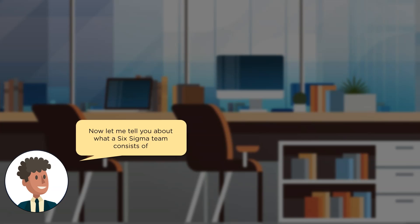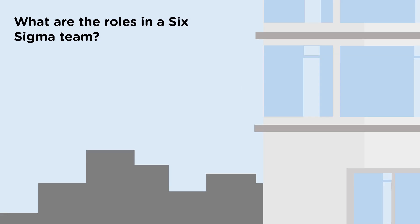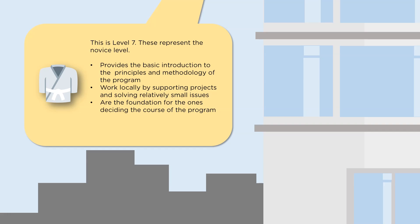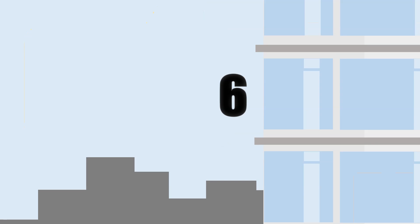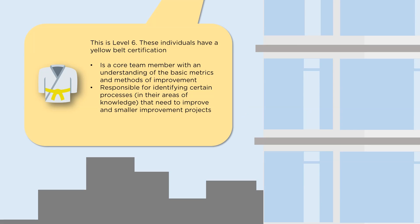Now let's talk about the roles in a Six Sigma team. First, Level 7 — these are individuals at the novice level who don't know the project in great detail but have a basic understanding of the principles and methodology. They support smaller projects and form the foundation for people who decide where the program is going. Level 6 are individuals with a yellow belt certification — core team members who understand basic metrics and how to perform improvements. They have their own areas of expertise and are in charge of smaller improvement projects. Level 5 are green belt certified individuals — part-time professionals who focus on smaller Six Sigma projects, gathering data, performing experiments, analyzing information, and assisting with black belt projects.